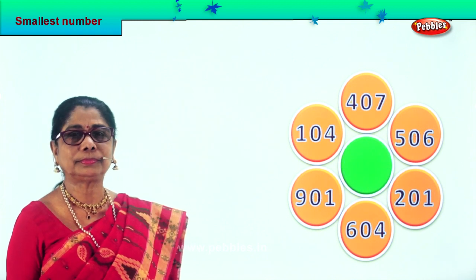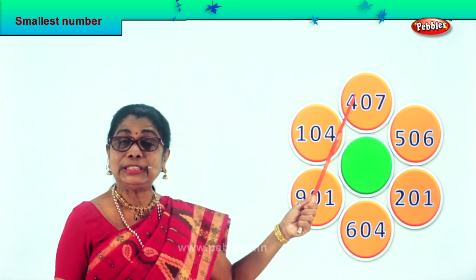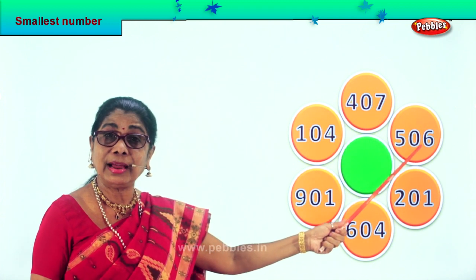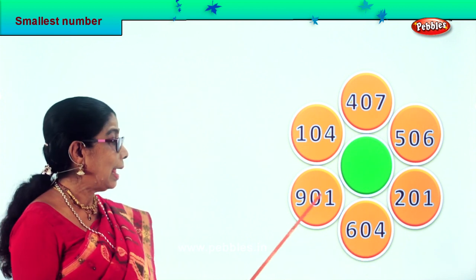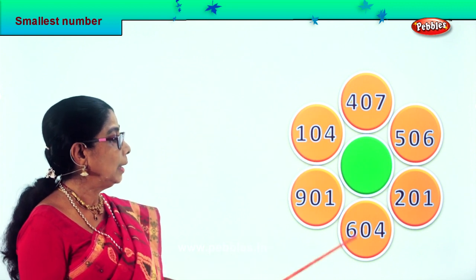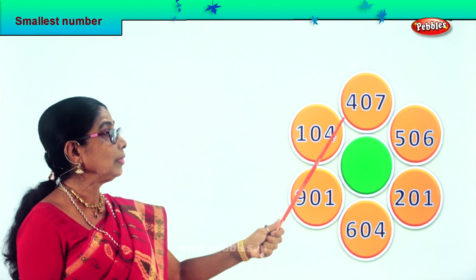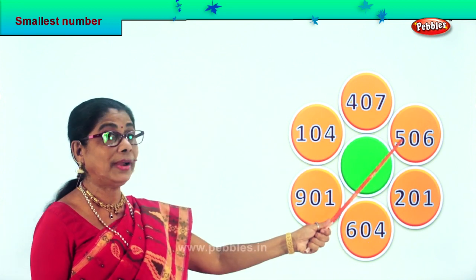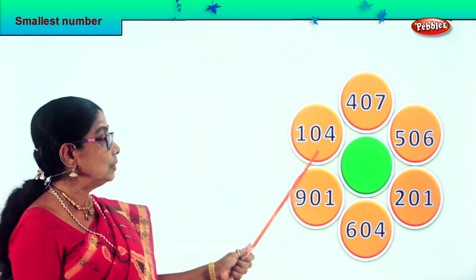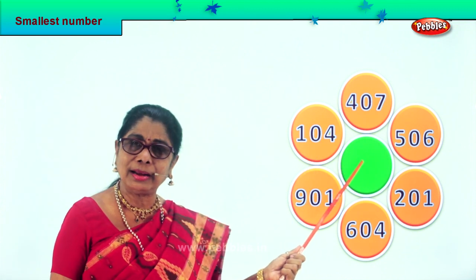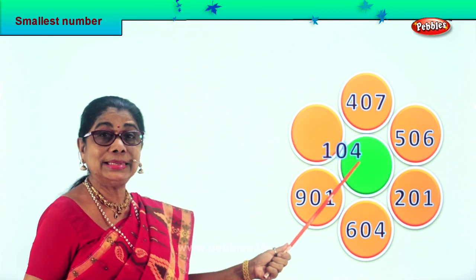Let's look at another sum and identify the smallest number. We have here: four hundred seven, five hundred six, two hundred one, six hundred four, nine hundred one, one hundred four. In the tens place we have all zeros. Let's go to the hundreds place: four hundred, one hundred, nine hundred, six hundred, two hundred, five hundred. Which is the smallest? We have two hundred and one hundred — so the smallest number is one hundred and four. We take one hundred and four, the smallest among the six numbers, and put it in the middle.